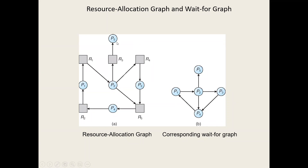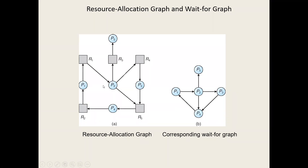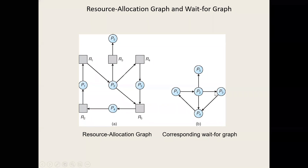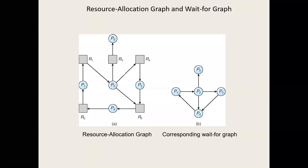After P5 completes, P1 is still waiting for P2, P2 is waiting for P3, P3 is waiting for P4, and P4 is waiting for P1. There is a cycle and there is a deadlock. The processes involved in the deadlock are P1, P2, P3, and P4. P5 is not in a deadlock.